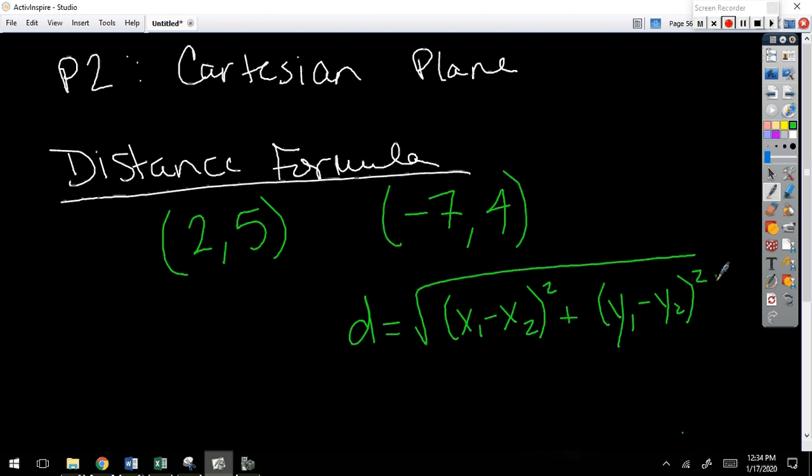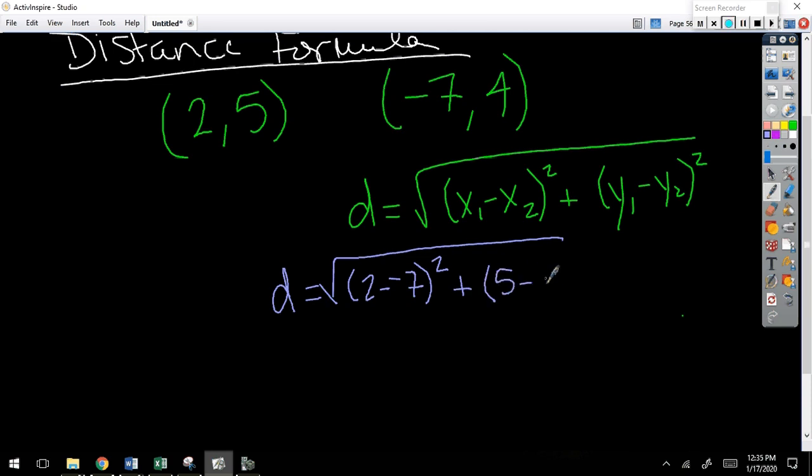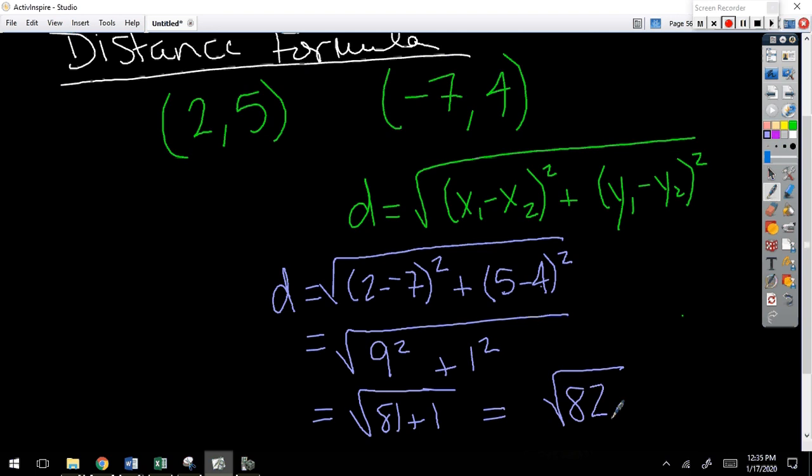So if I look at those two points that I have right there and I want to find the distance, 2 minus negative 7 would be 9, and 5 minus 4 would be 1. What is 9 squared? 81. 1 squared is 1. So the distance is the square root of 82.